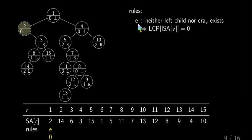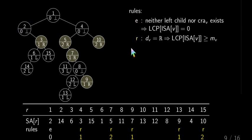The first easy case is the rule E. E means that we have neither a left child nor a cray, which is, for instance, the case for the node 2. Then we know that there is nothing to compare, because we are always comparing in the LCP array with the lexicographically preceding suffix. But there is nothing, so we can surely write down zero.